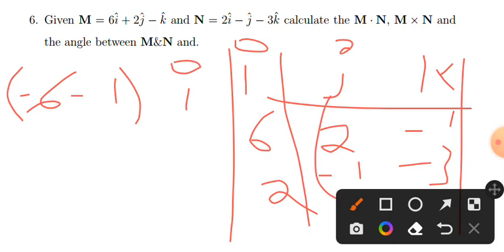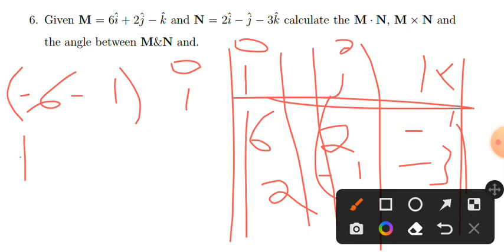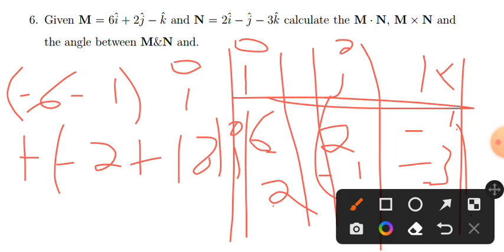For the i direction, we calculate: 2 times -3 minus -1 times -1. That's -6 minus 1 equals -7 for the i component.